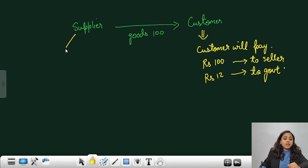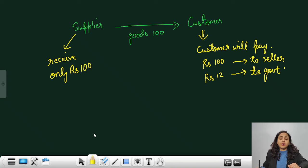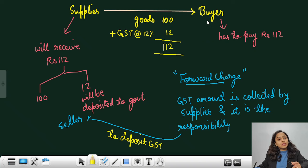Wherein the supplier will be receiving, will receive only Rs 100. See the net inflow is same for the seller. There is no loss or gain over here in both the cases. The final outflow is from the pocket of customer. Because here also he is paying Rs 112. And in the previous case also, the buyer was paying Rs 112.